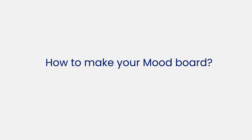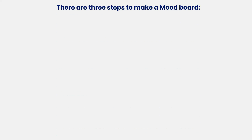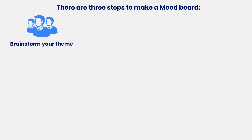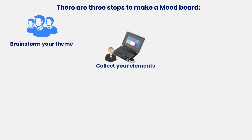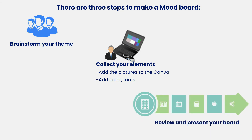Now let's learn how to make a mood board. There are three steps: brainstorm your theme, collect your elements, and add pictures to the canvas. You'll also want to add color and fonts, review and present your board, and export the mood board to print or PDF.